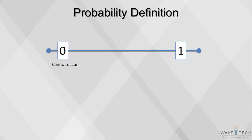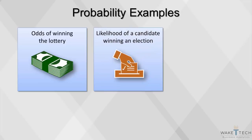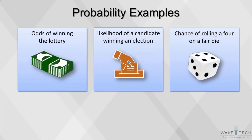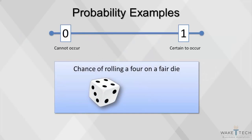An event with probability 0 cannot occur, whereas an event with probability 1 is certain to occur. An event with probability greater than 0 and less than 1 involves uncertainty. Here are some examples: the odds of winning a lottery, the likelihood of a particular candidate winning an election, or the chance of rolling a 4 on a fair die. In the case of the die, there are 6 sides, so the odds of rolling a 4 are 1 out of 6.